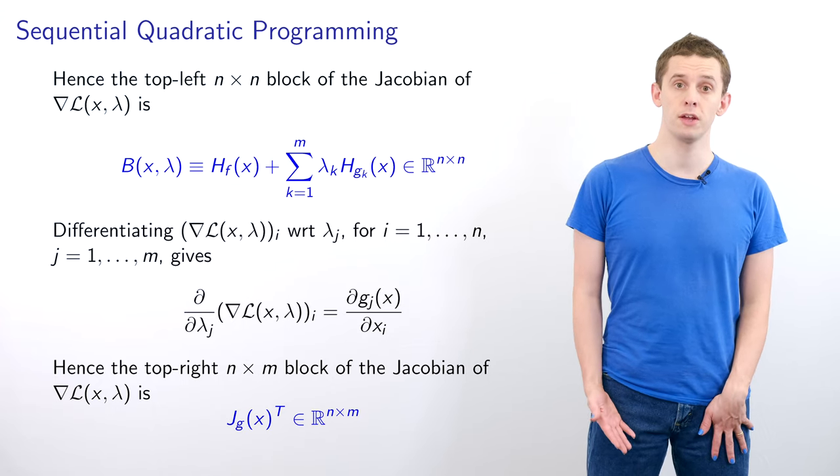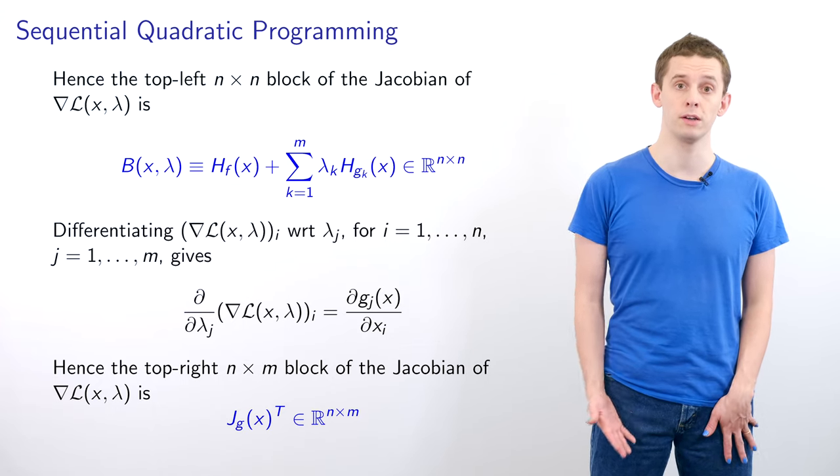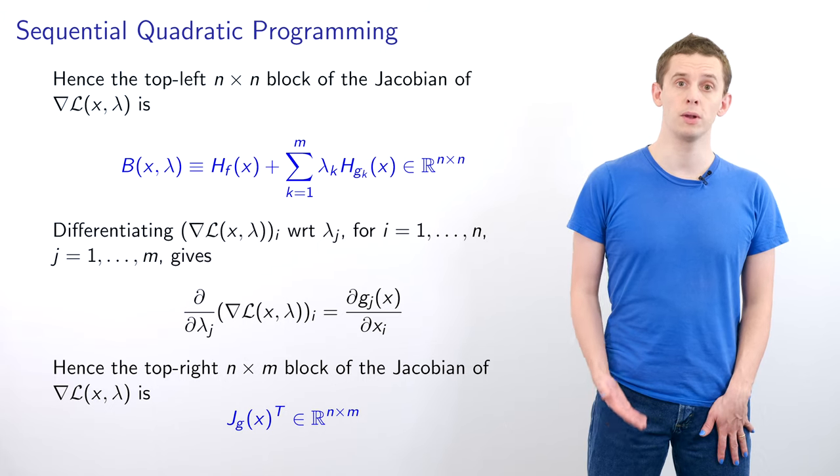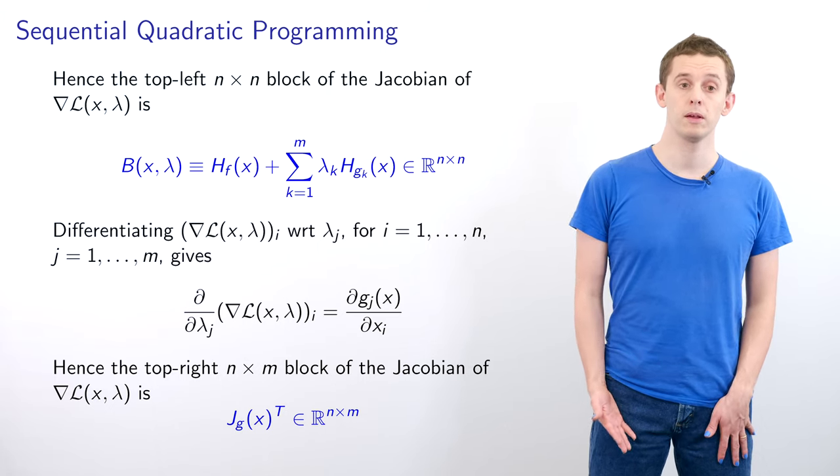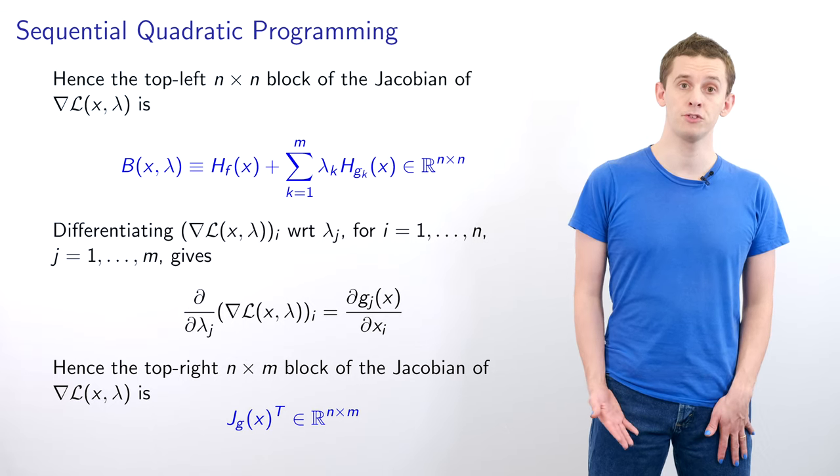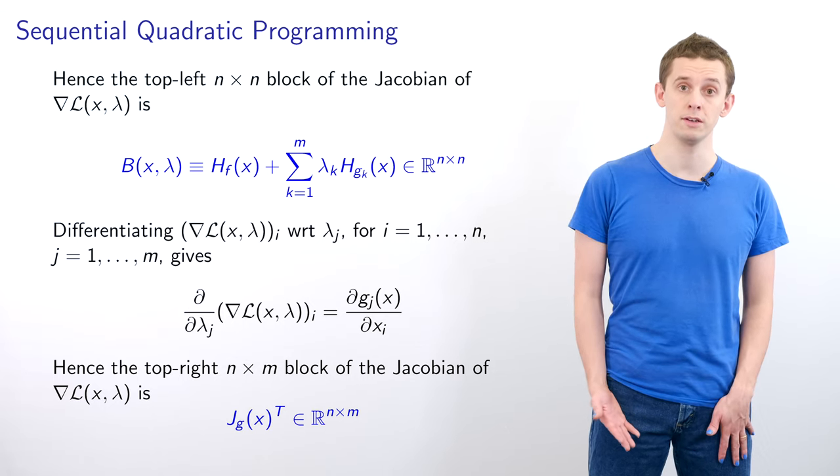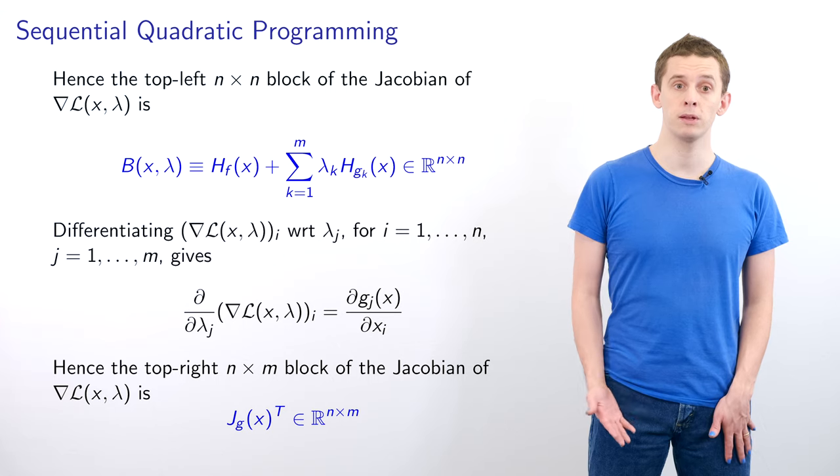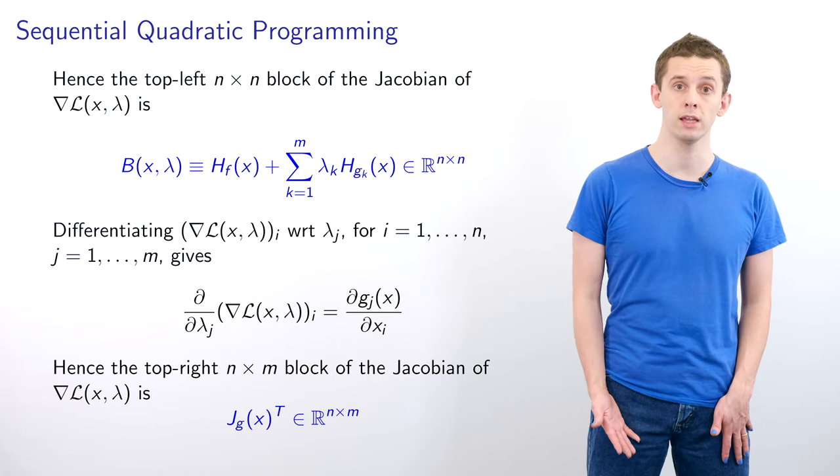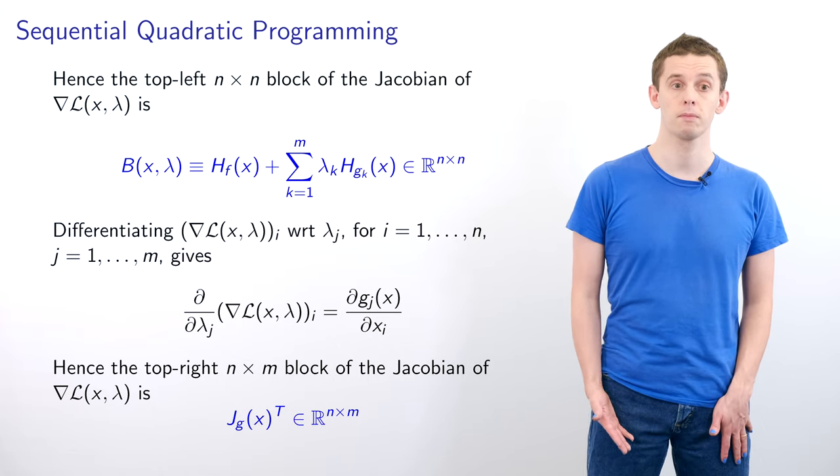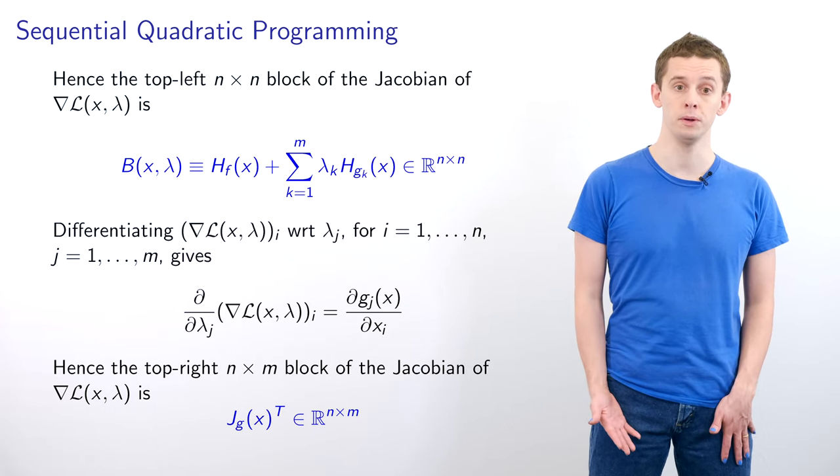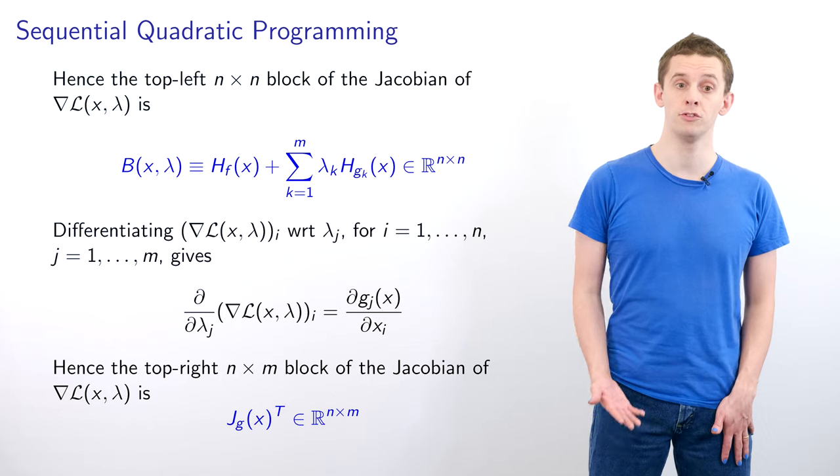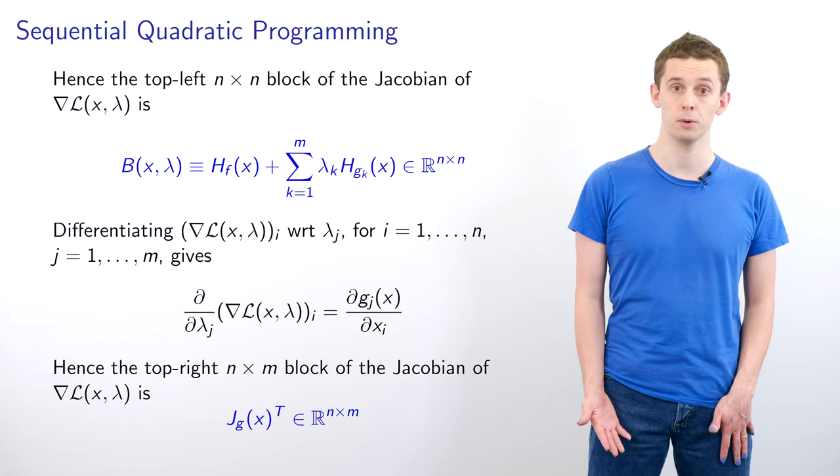Now let's look at differentiating the i-th component of the gradient of L with respect to λ_j where j is from 1 to m. We have ∂/∂λ_j of the i-th component of the gradient of L and that will evaluate to ∂g_j/∂x_i. Hence we see that the top right n×m block of the Jacobian is given by the Jacobian of g transpose.